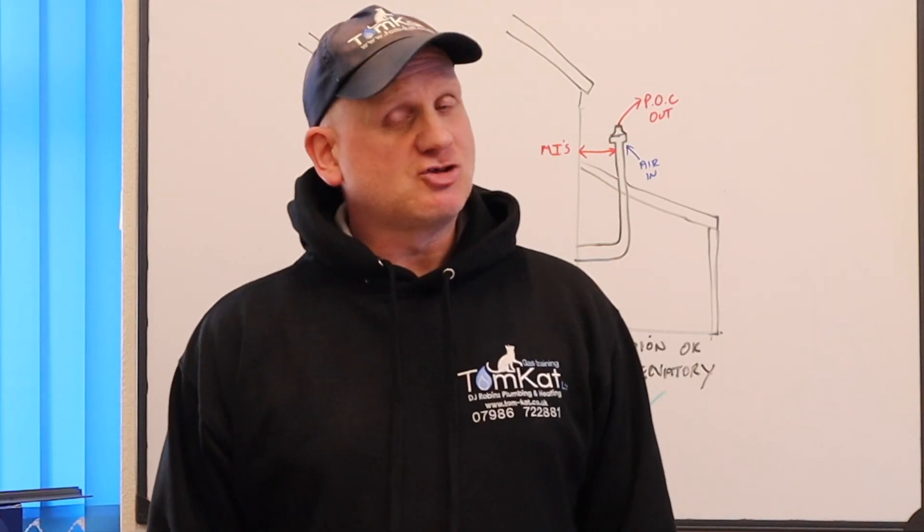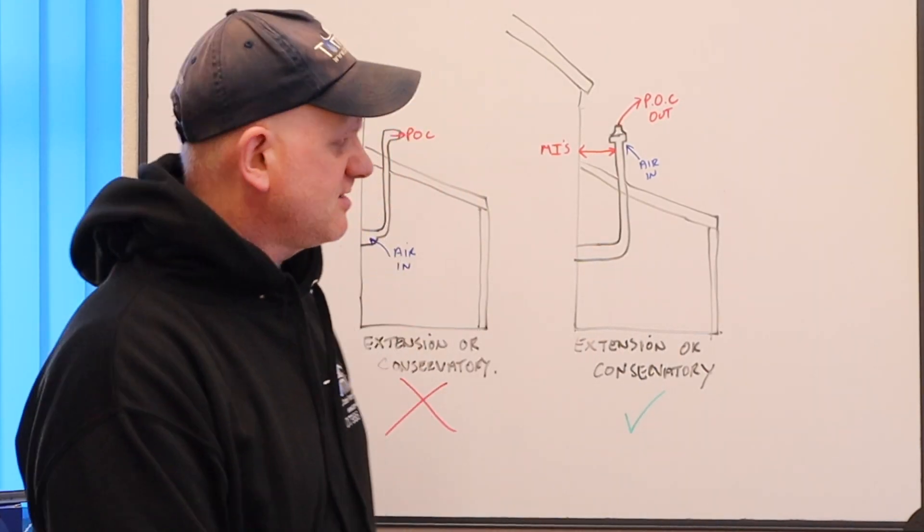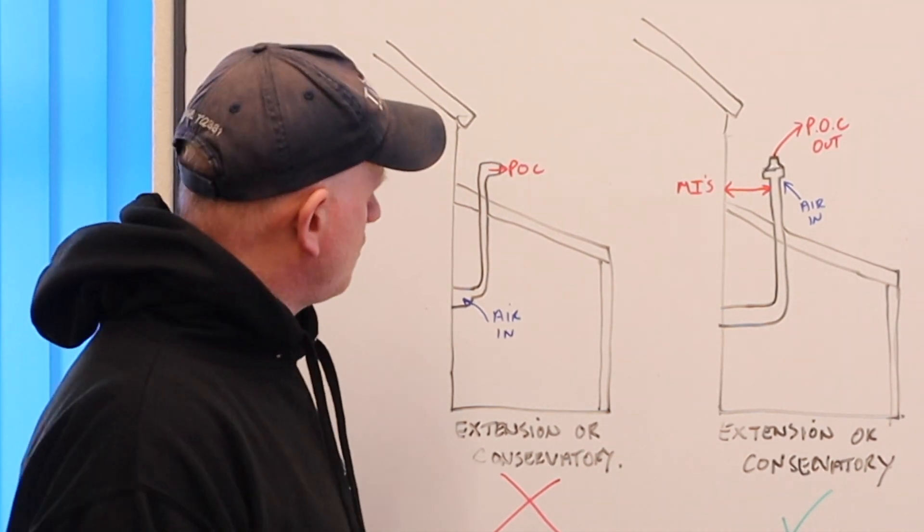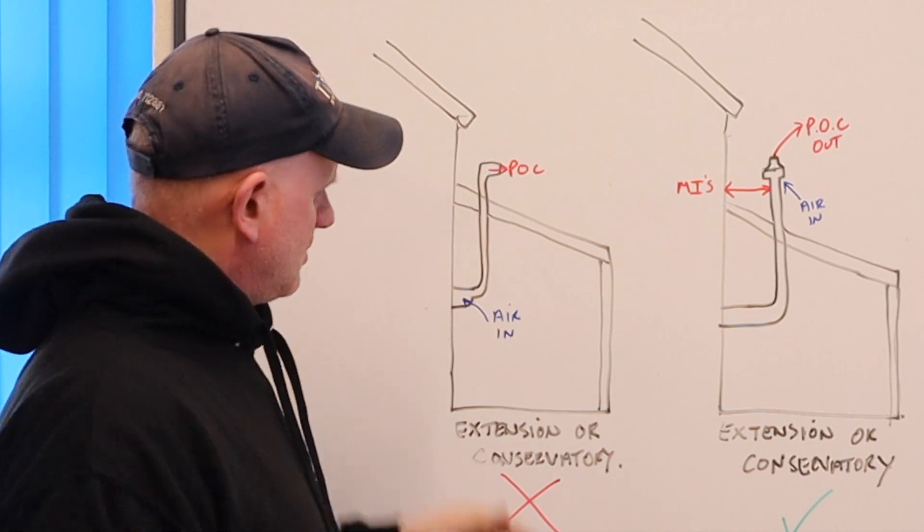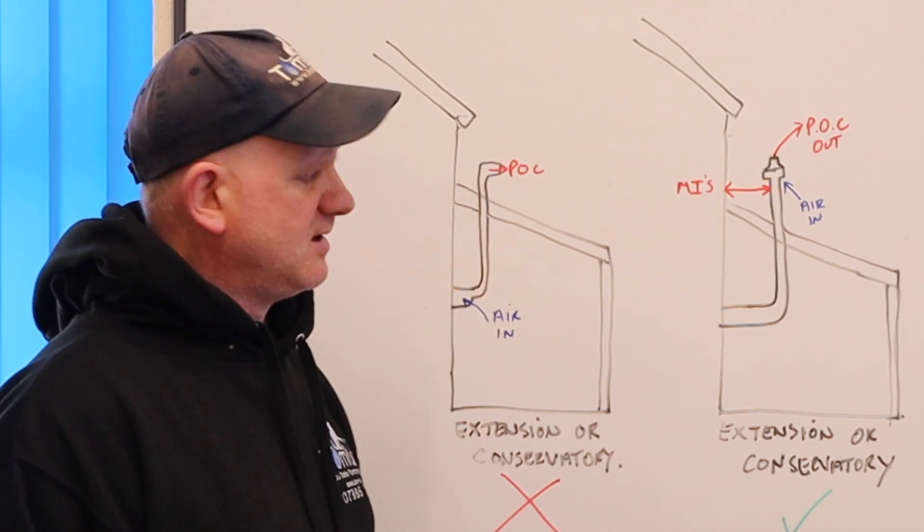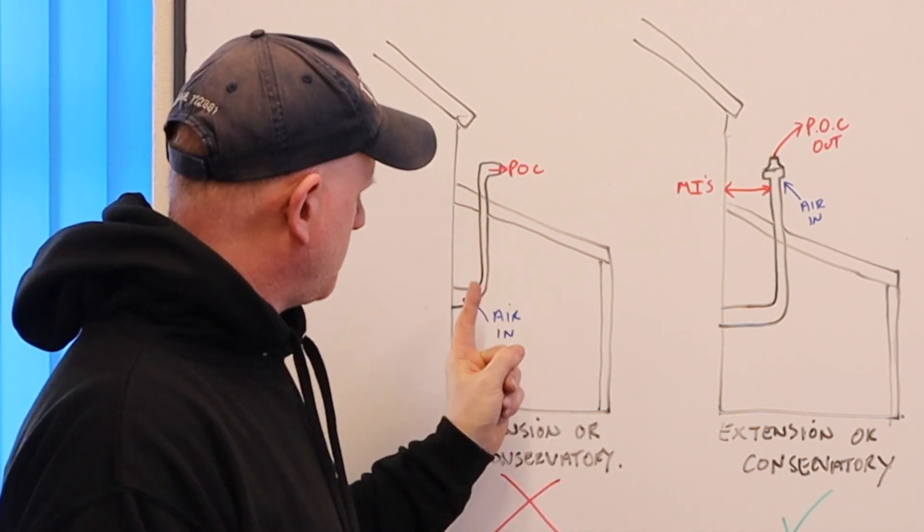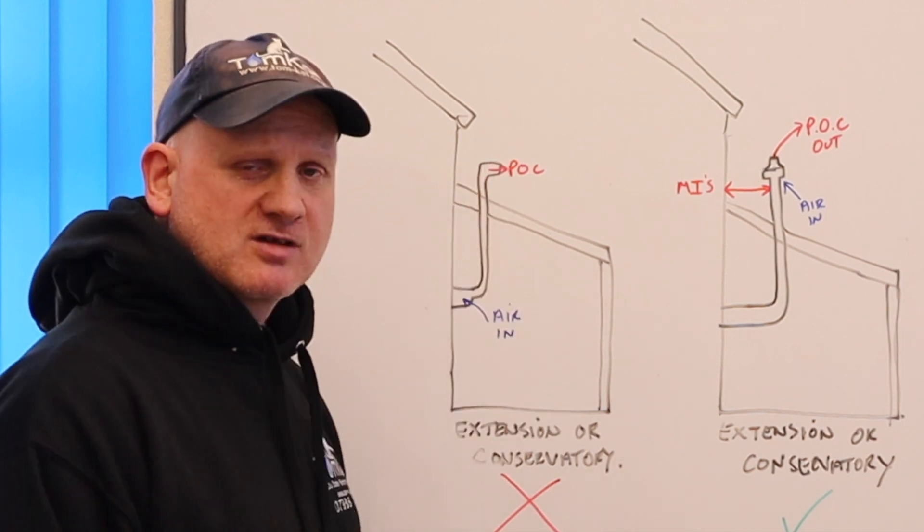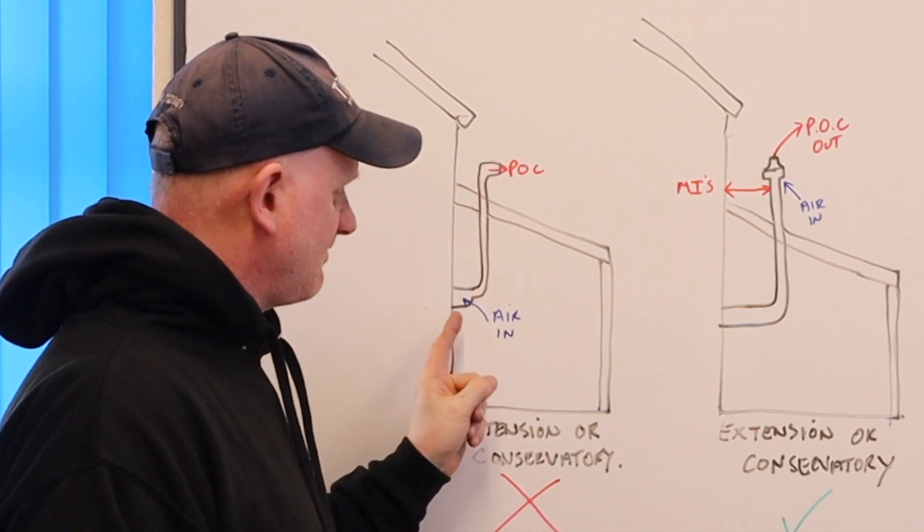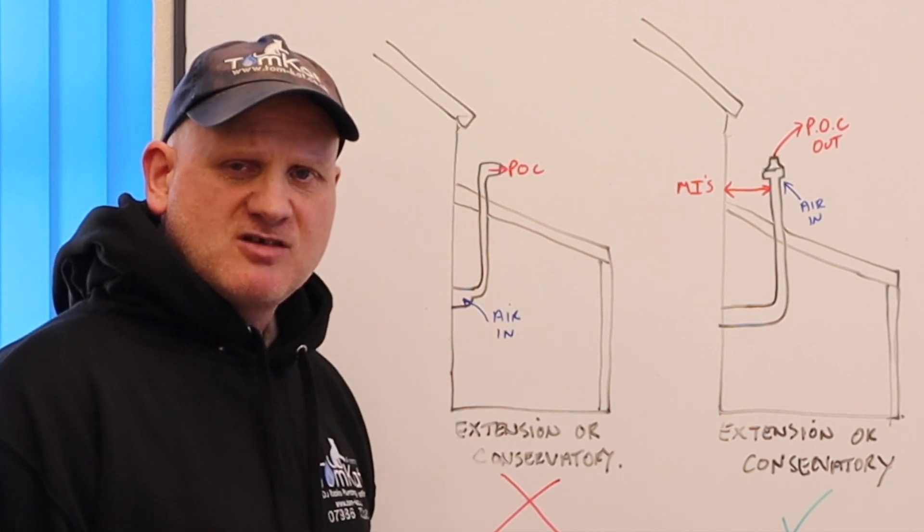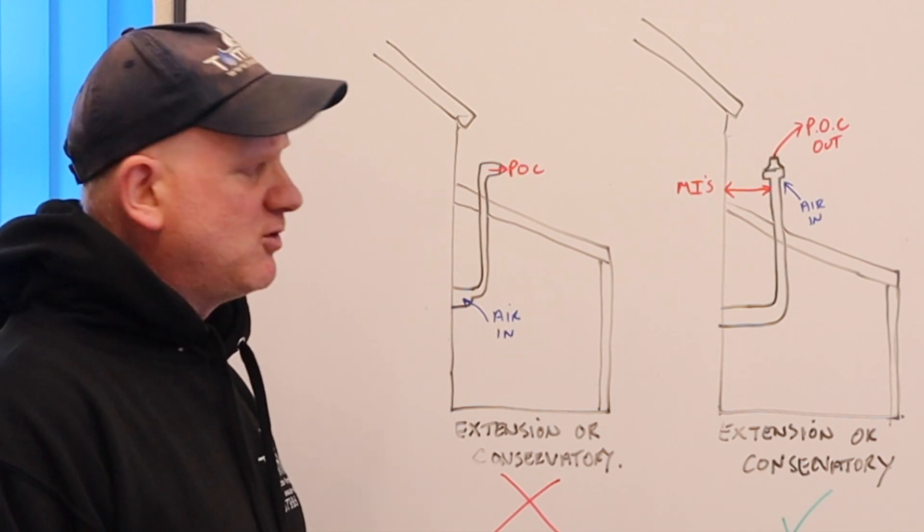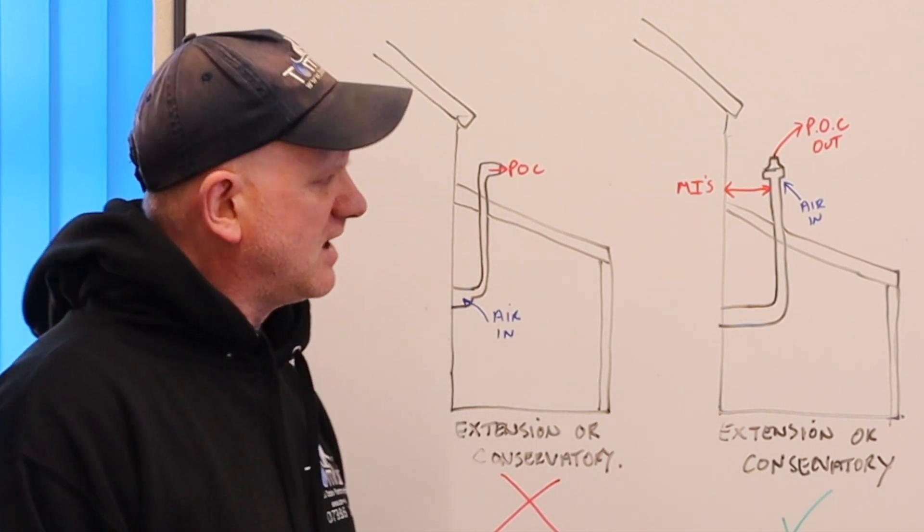Now, one of the things you can't do with a plume kit is this. So this is an extension or a conservatory and this is the old position of the flue. So the products of combustion came out here. You cannot use a plume kit to take the products of combustion out through the roof and leave the air intake coming in your kitchen extension or your conservatory. You cannot do that. And that would be deemed at risk if you did do that.